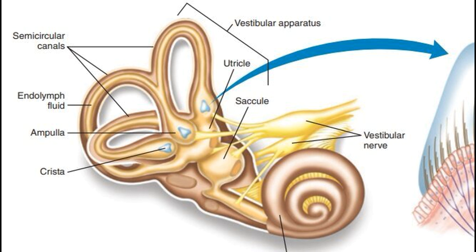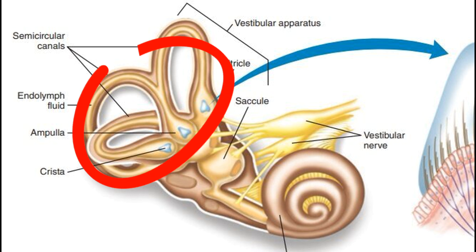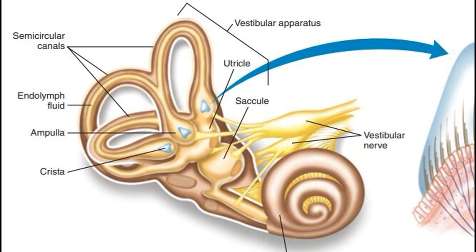The vestibular system consists of three semi-circular canals and two otolith organs — the utricle and the saccule. Each of these components plays a specific role in detecting different types of motion and orientation. These structures are filled with fluid and lined with specialized hair cells, much like the cochlea. When we move, the fluid inside these canals shifts, causing the hair cells to bend and send signals to the brain about our body's position and movement.